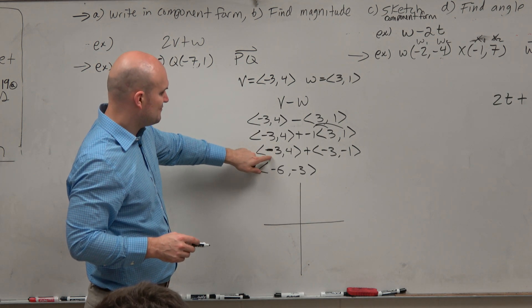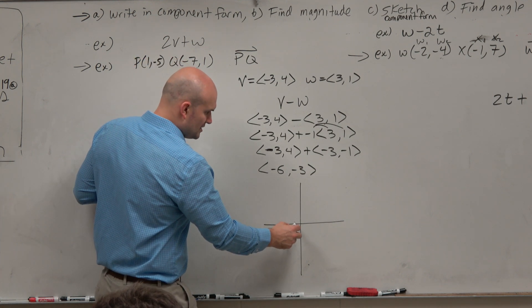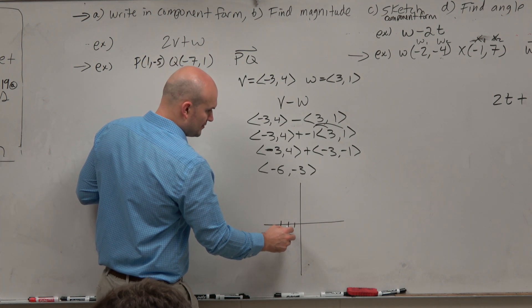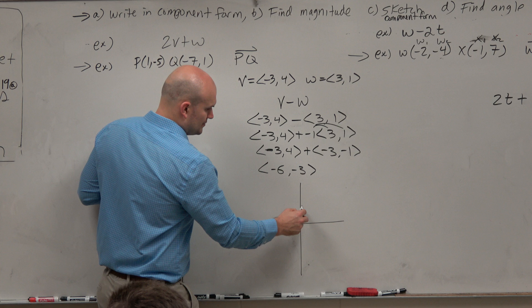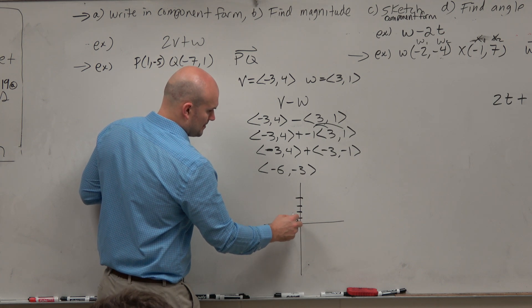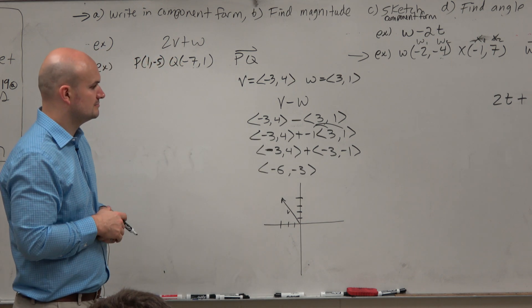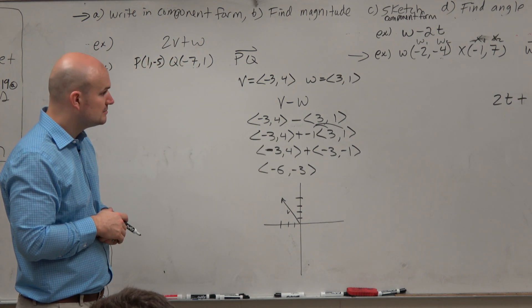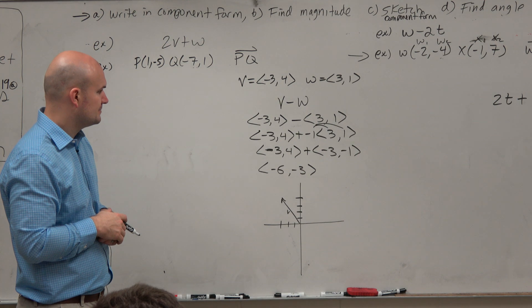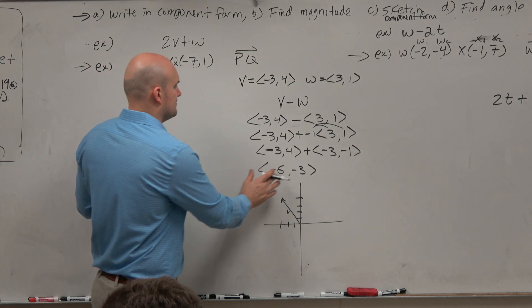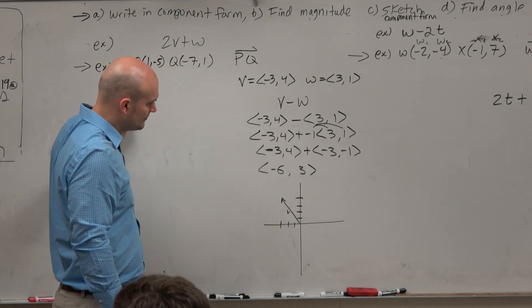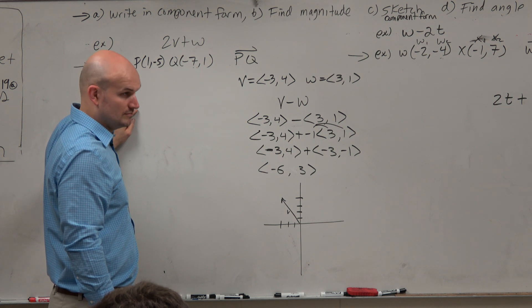So let's go ahead and graph v. v is at negative 3, 4. So 1, 2, 3, 1, 2, 3, 4. OK, there is my vector v. Yes? Should it be a positive 3? I have no idea. Which one? That should be a positive 3. Thank you. So there's vector v. Are we good?